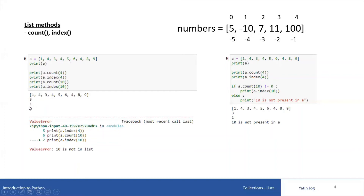Four first appears at index one, so a.index(4) returns one, which is what is printed on the screen. Now I'm trying to count the occurrences of value 10 in list a. You can see that 10 is not present in list a, so the count function returns zero — if the value is not present, count returns zero.